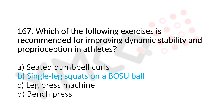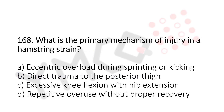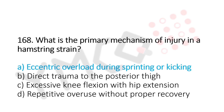Let's move to question number 168. What is the primary mechanism of injury in hamstring strain? Option A, eccentric overload during sprinting or kicking. Option B, direct trauma to the posterior thigh. Option C, excessive knee flexion with hip extension. Option D, repetitive overuse without proper recovery. And the answer is Option A, eccentric overload during sprinting or kicking.